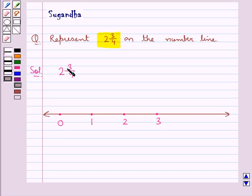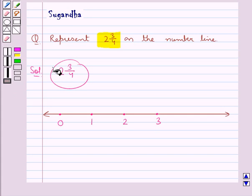Now as we need to represent the number 2 and 3 upon 4, this number 2 and 3 upon 4 is greater than 2 and less than 3, so it should lie between 2 and 3 in this area.